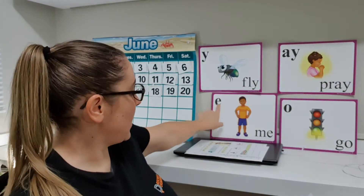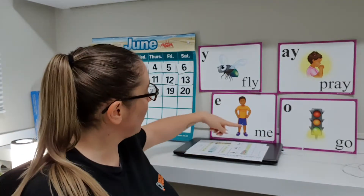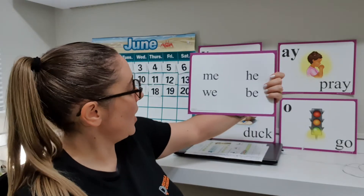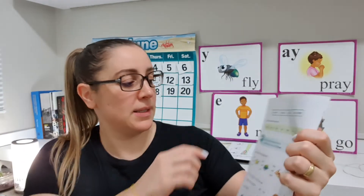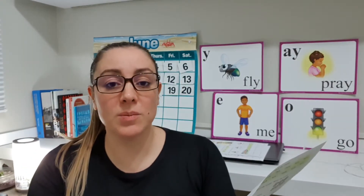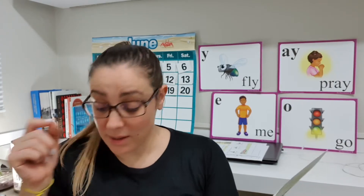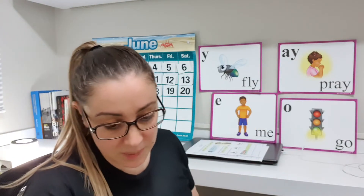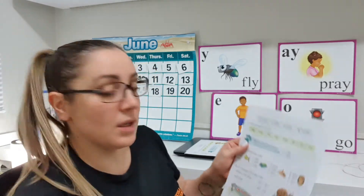Esses aqui já são mais fáceis, né? I em me, O em go. Lembram? Go, no, me. E quais outras? P, we, be. Mais fácil. So, let's do exercise number one. You are going to circle the special sounds. Peguem lá seus lápis and circle the special sounds, que são esses aqui. E o CK que a gente aprendeu já na aula passada. Circle.